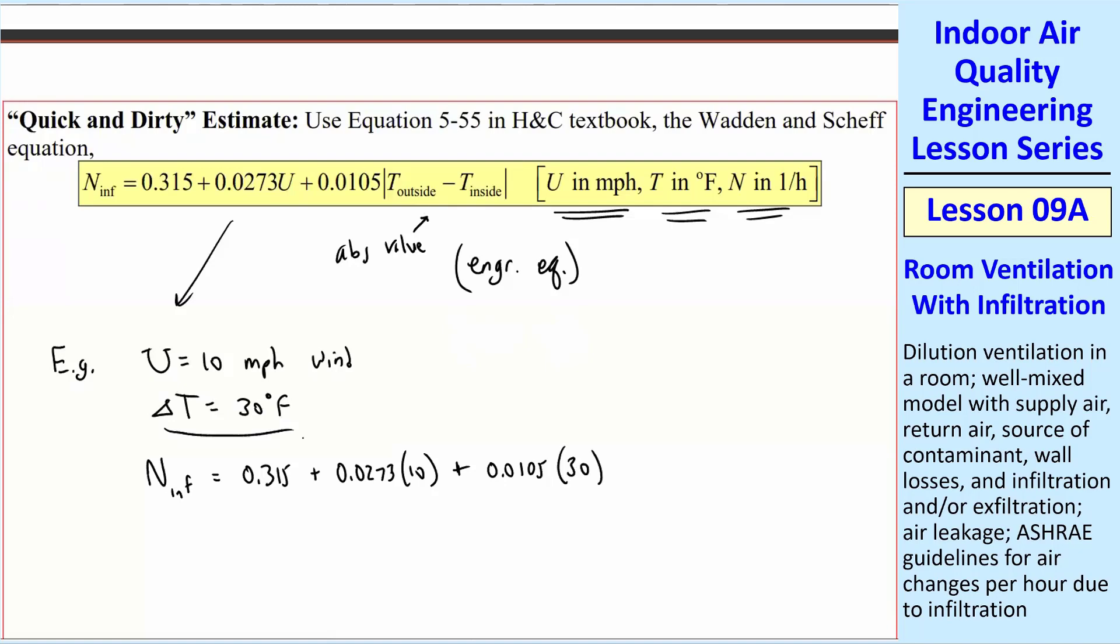So we take the absolute value here. It's 30. And that's in degrees F, so we don't put any units. And when you plug everything in, you get 0.903, 1 over hour.